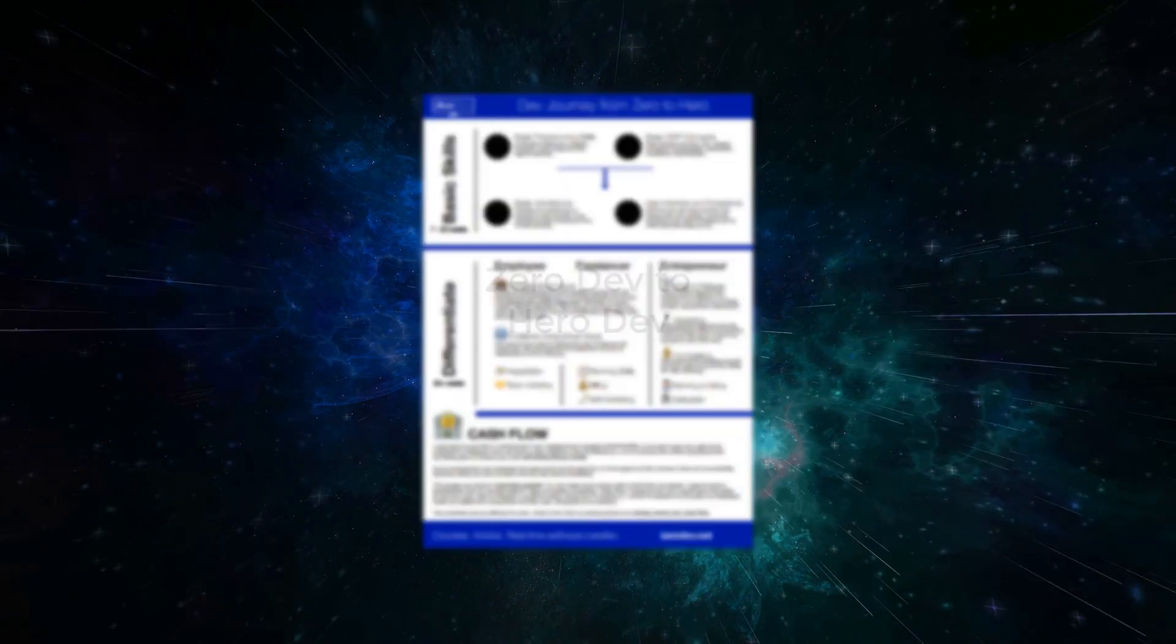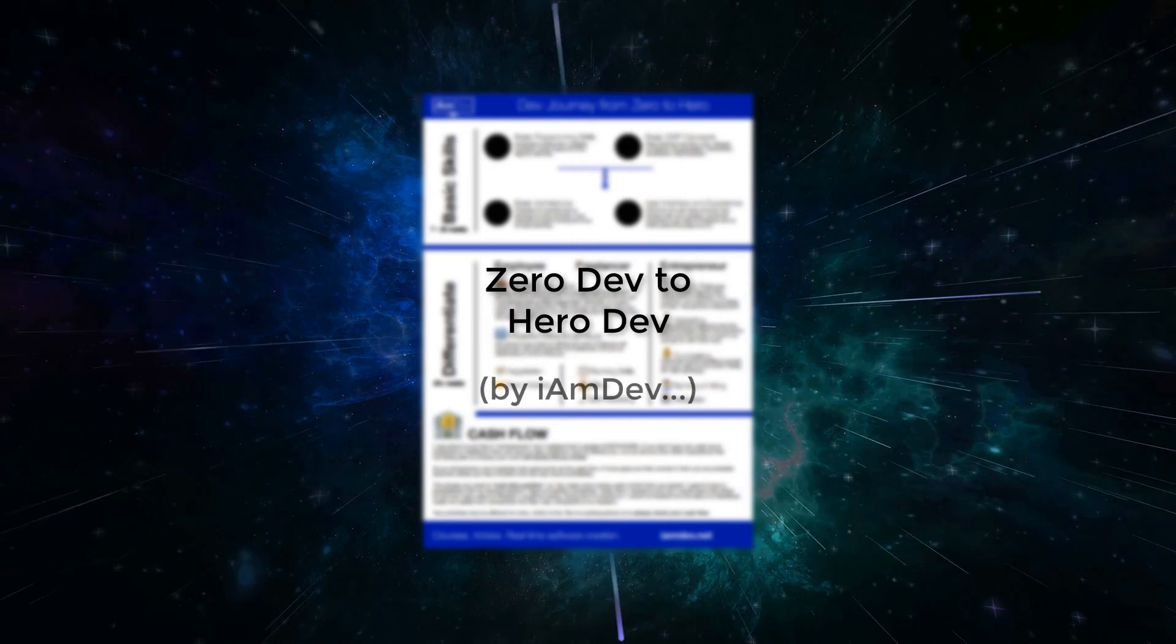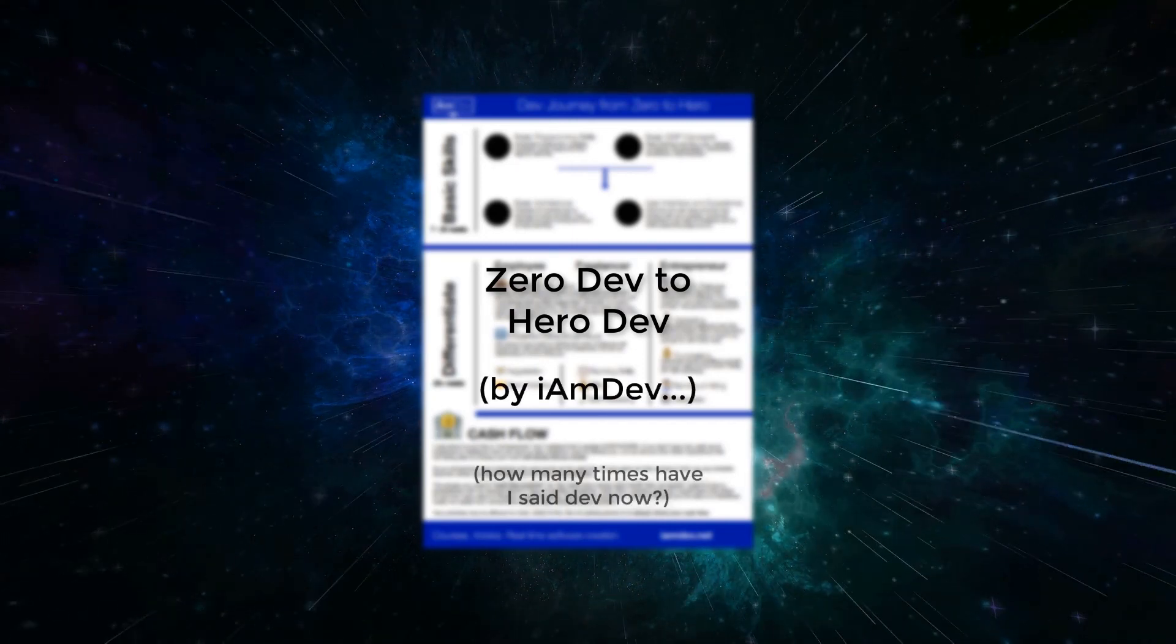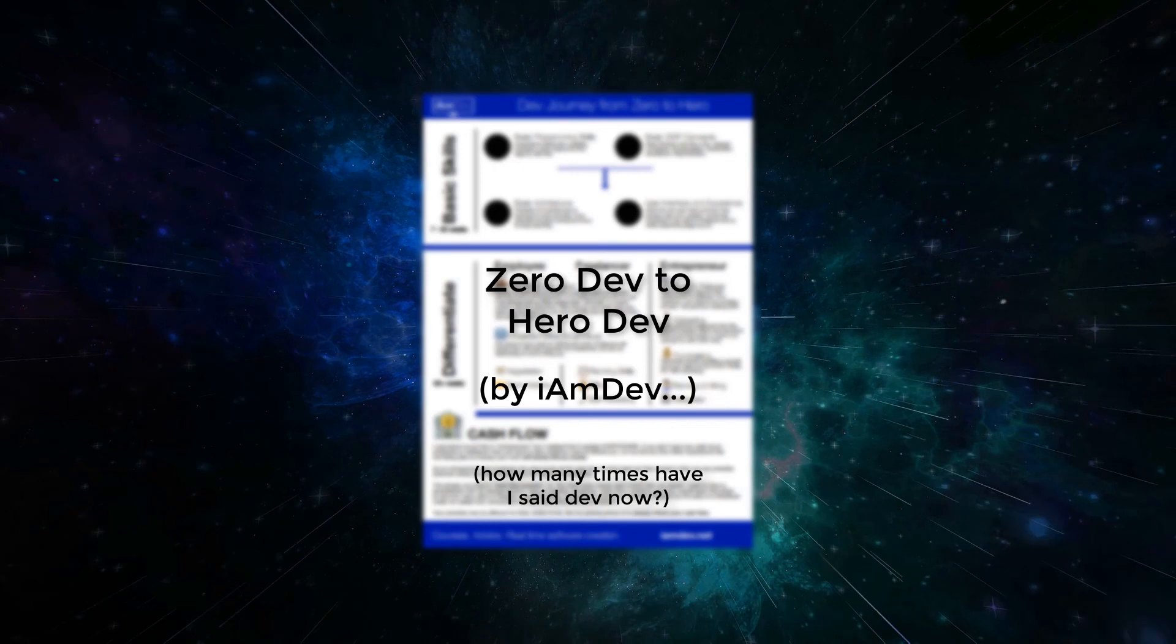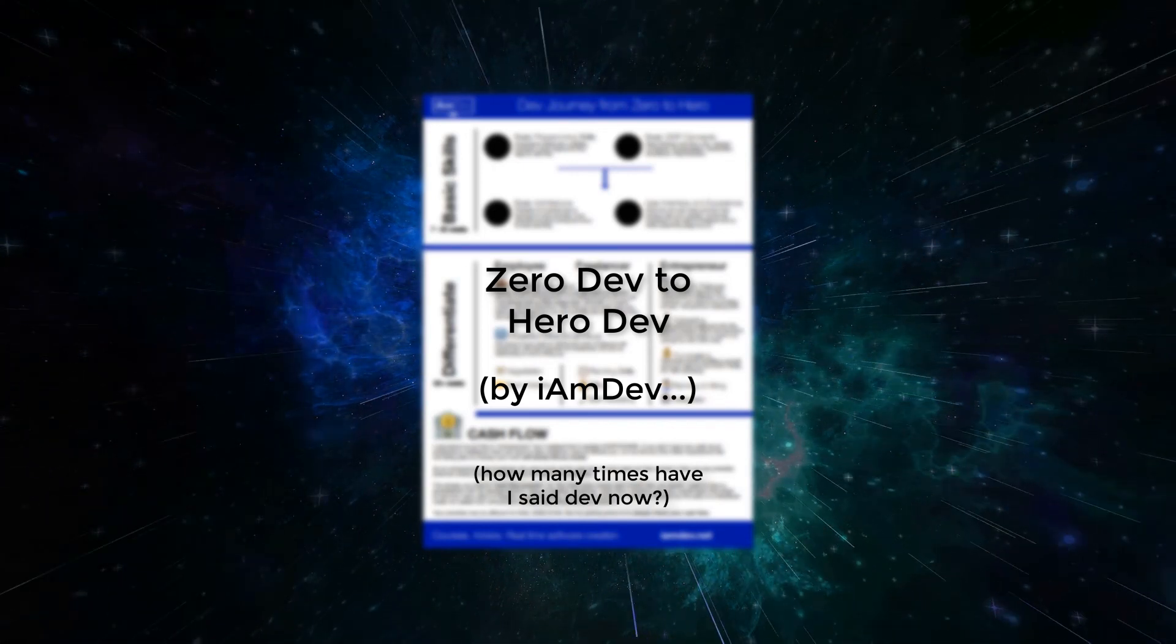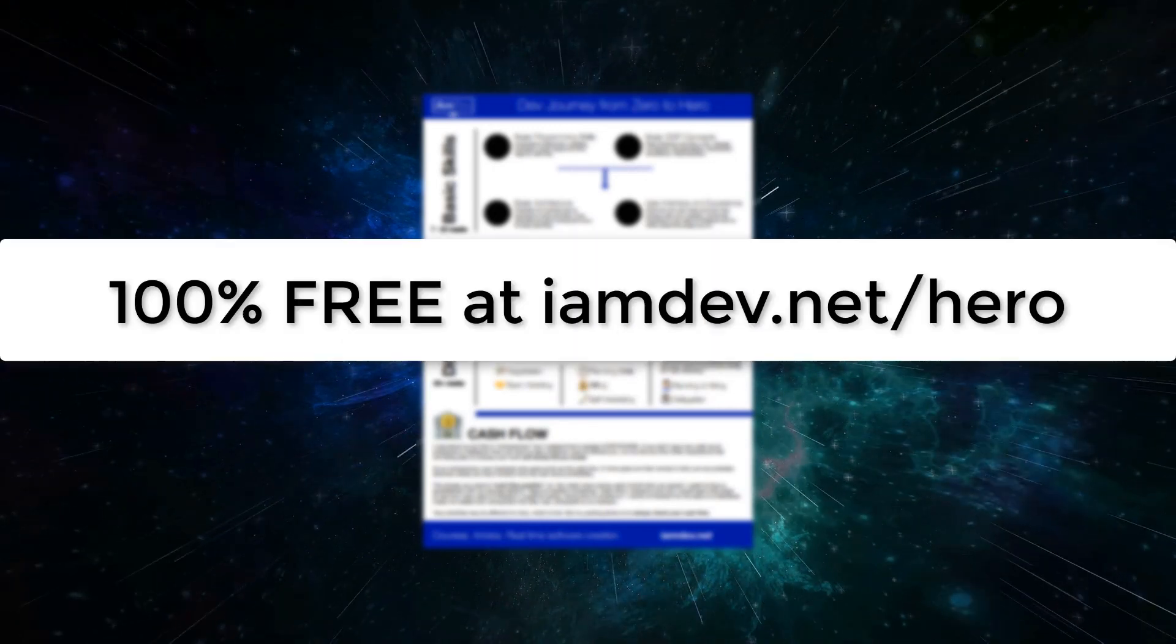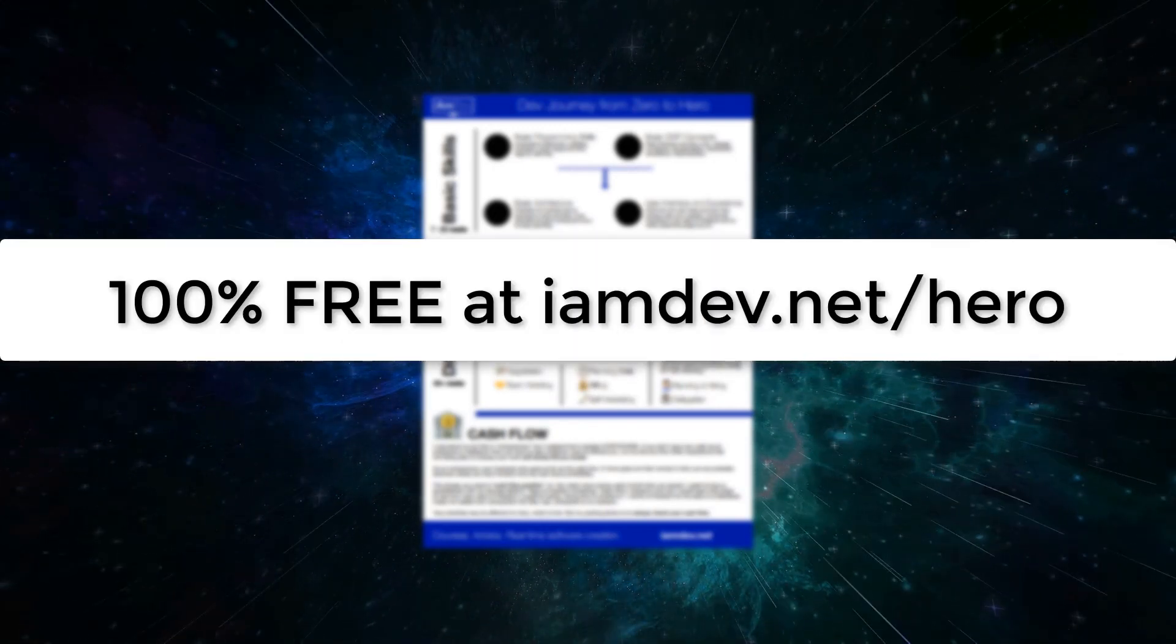And that's where my free guide comes in: Zero Dev to Hero Dev. It outlines top level skills you need to become an employee, freelancer, entrepreneur, or any mixture of the three. If you want a map to success, then this guide is what you're looking for. Get it for free at imdev.net/hero.